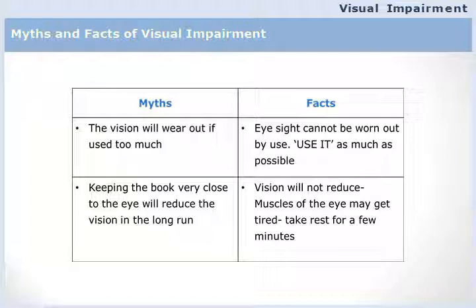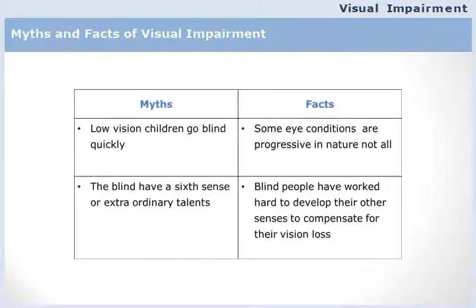Many times we observe children bringing their books too close to their eyes and we discourage them, thinking they will lose whatever vision they have. The fact is they may be more comfortable reading at that particular angle, so we should never stop them. Most people believe those with low vision will eventually lose all their vision, but only some conditions are progressive. Many eye conditions are stable — the person will continue to have residual vision for all their life and should be encouraged to use it.